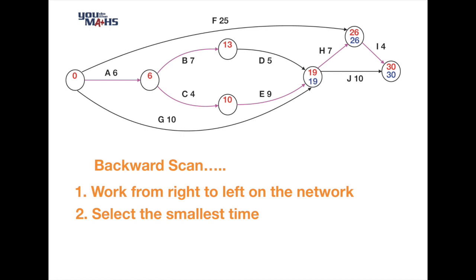Continuing right to left, tasks D and E each have one number to consider: 19 minus 5 is 14, and 19 minus 9 is 10. The next circle from tasks B and C has two options: 14 minus 7 is 7, and 10 minus 4 is 6; the smallest is 6. The final start circle has three lines: from F, 26 minus 25 is 1; from A, 6 minus 6 is 0; and from G, 19 minus 10 is 9. The smallest is 0, which goes into the start circle.